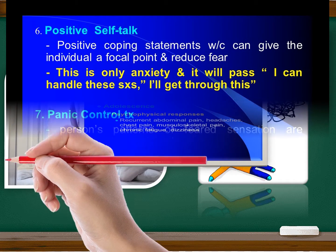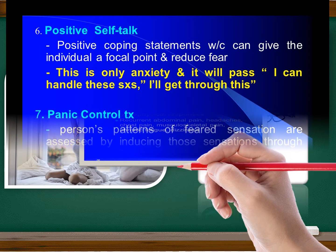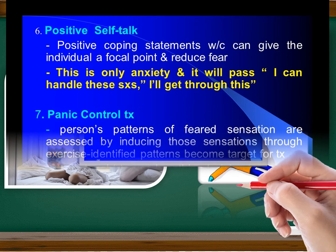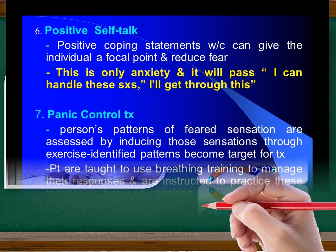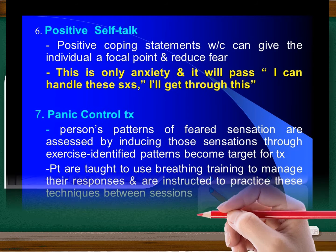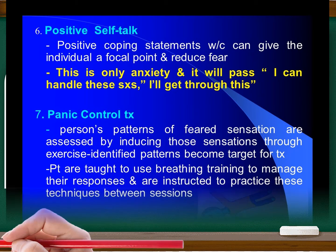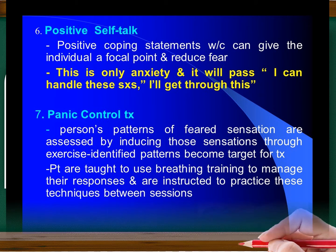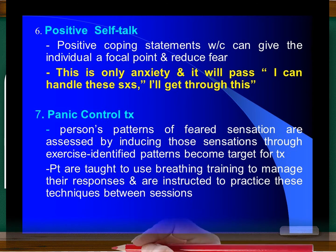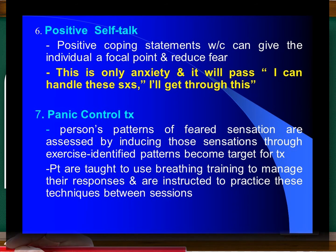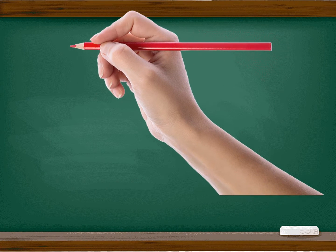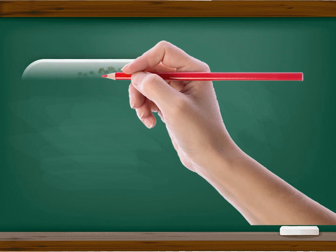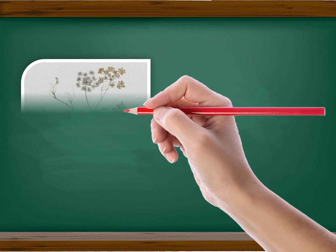When the person has recurrent, unexpected panic attacks, followed by at least one month of persistent concern or worry about having future attacks, staying away from places or people where panic attacks occurred, great apprehension about the outcome of routine activities, loss or disruption of important interpersonal relationships, demoralization and possible major depressive episode, transient tachycardia, moderate elevation of systolic BP, and respiratory alkalosis.